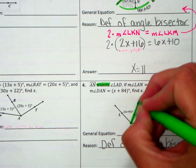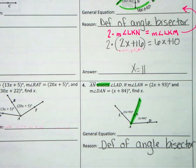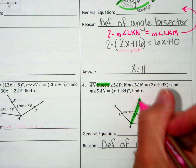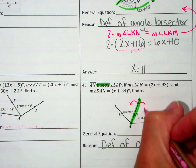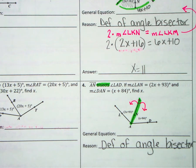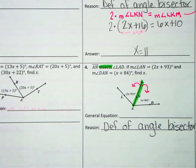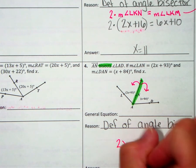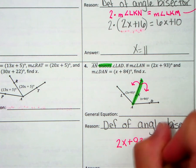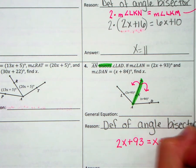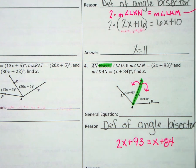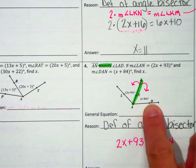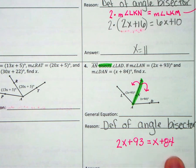So when you're told that this is the angle bisector, it's kind of like it's the midpoint. What that tells you is that that is breaking this angle into two equal parts. So the two parts there are equal to each other. So if I were going to write an equation, my equation would be 2x plus 93 is equal to x plus 84.